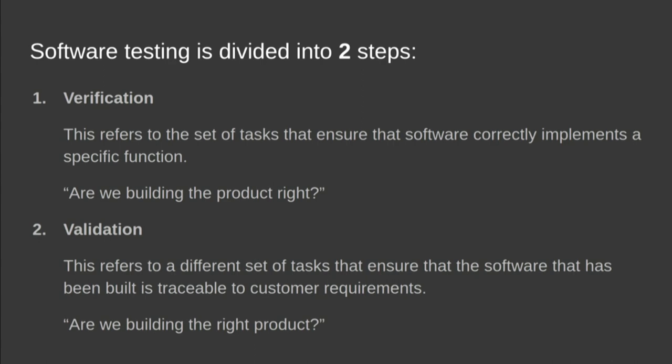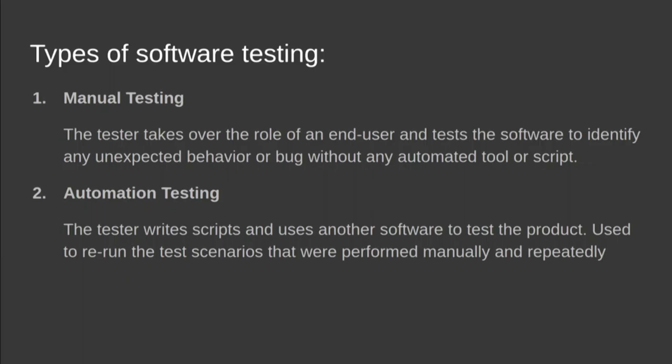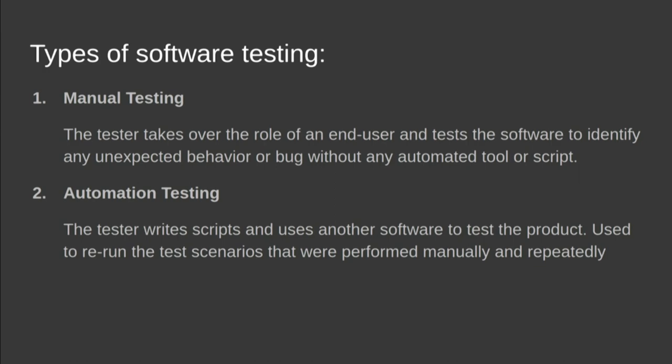There are two types of software testing. One is manual, where a person sits behind a computer and imitates all the steps for a software. Another is automation. Automation is required because a particular software can be tested in various different ways and this needs to be done multiple times.